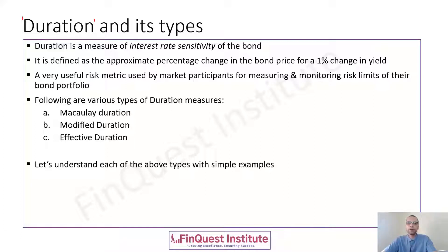Duration is also used for limit monitoring purposes. Banks have a very robust limit structure, and limits are a way of translating the risk appetite or risk tolerance of a bank into a quantitative term which can be used for actual benchmarking or comparison purposes. So for limits monitoring, duration happens to be one of the useful metrics which banks use.